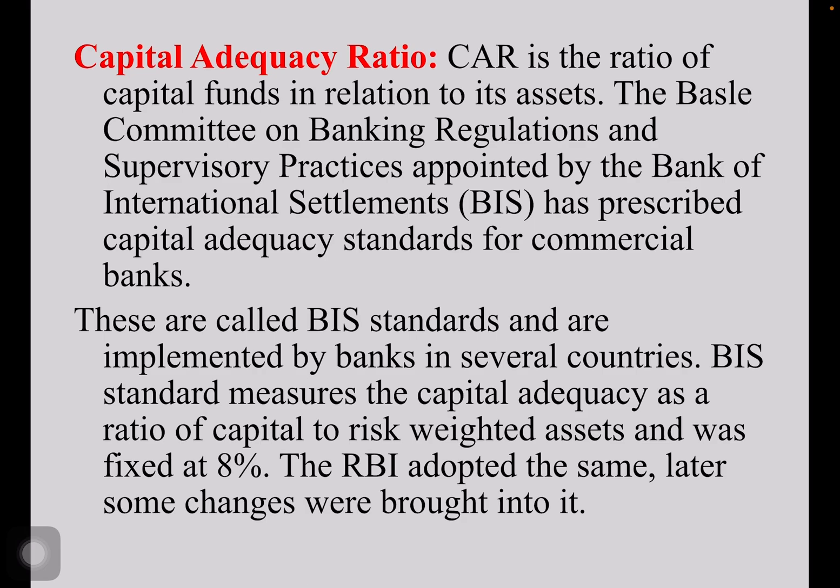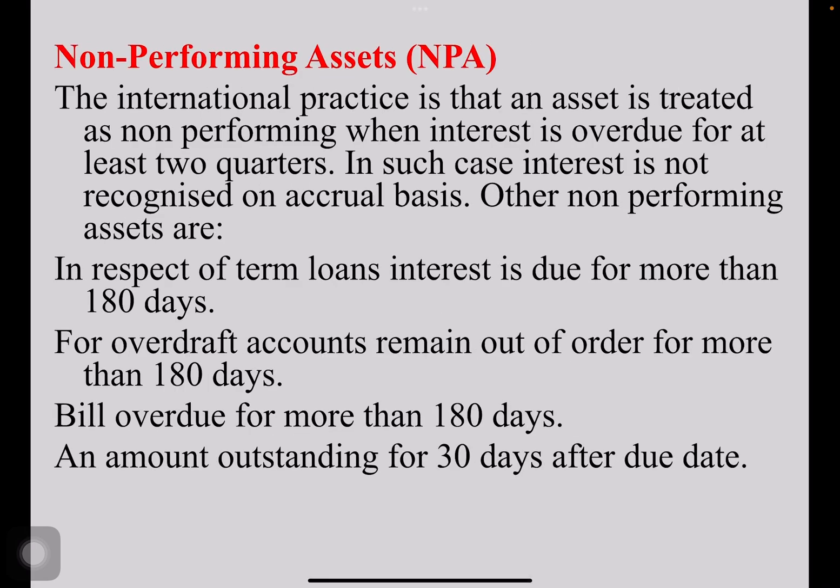Capital adequacy ratio is the ratio of capital funds in relation to its assets. The Basel Committee on Banking Regulations and Supervisory Practices, appointed by the Bank of International Settlements, has prescribed capital adequacy standards for commercial banks. These are called BIS standards and are implemented by banks in several countries. BIS standards measure capital adequacy as a ratio of capital to risk-weighted assets and was fixed at 8%. The RBI adopted the same with some changes brought into it.